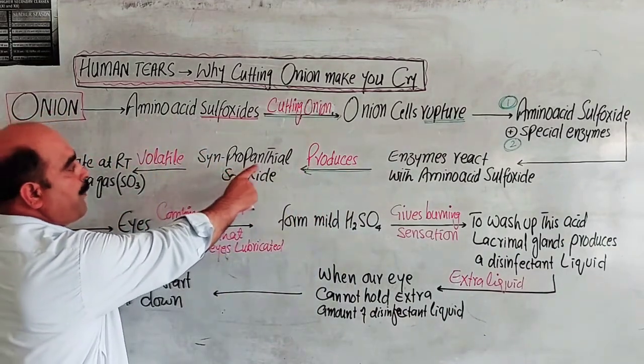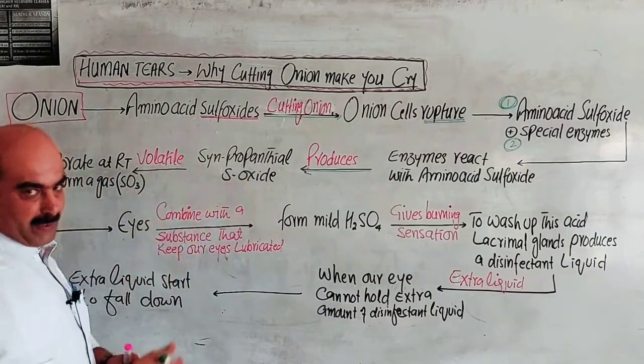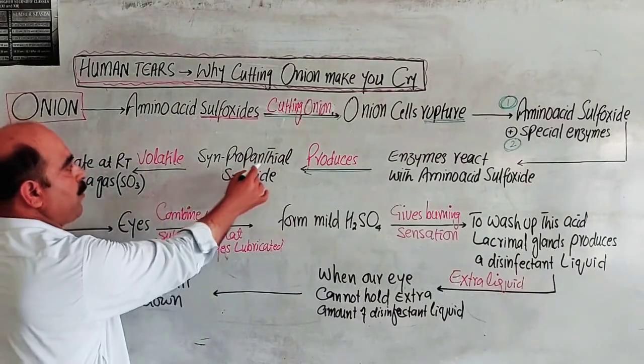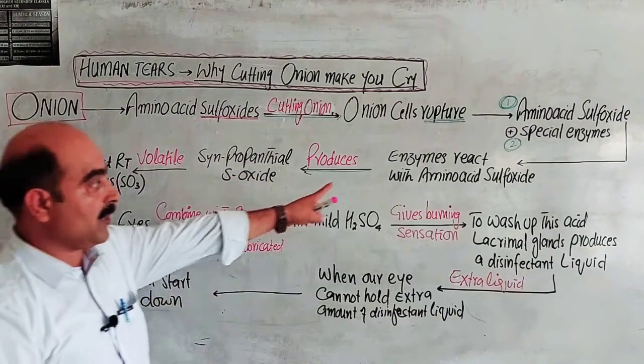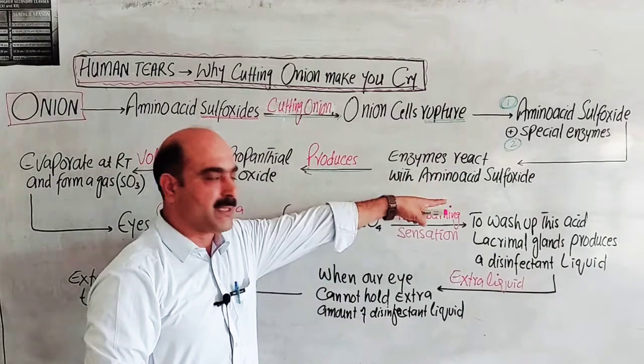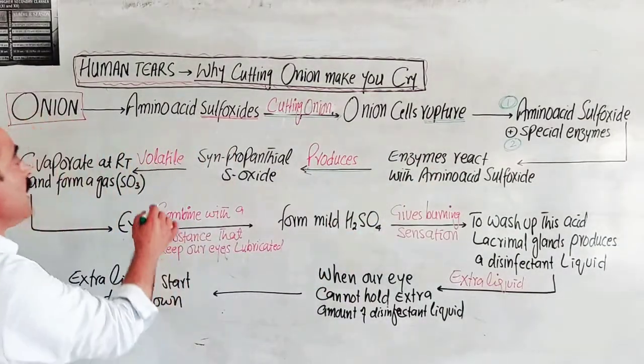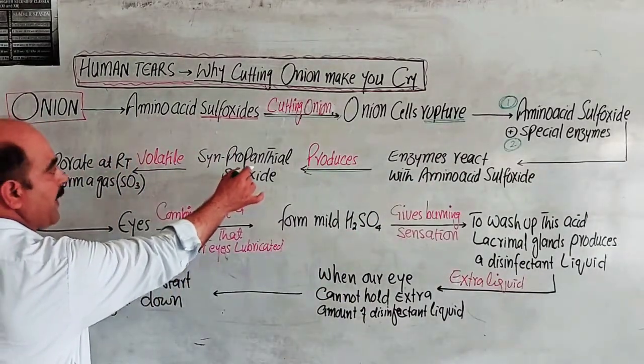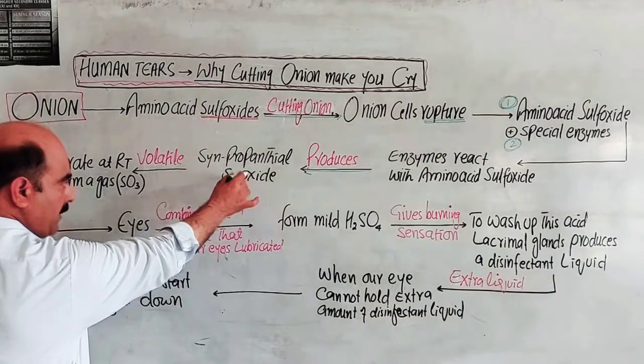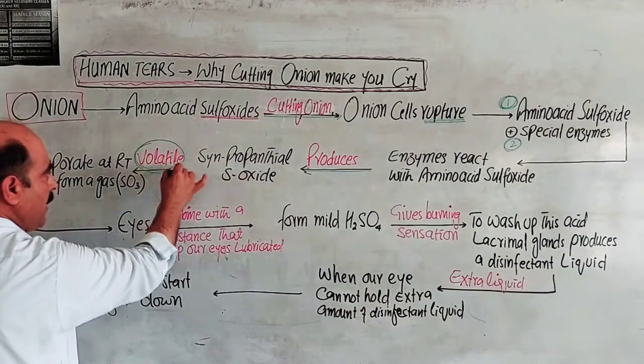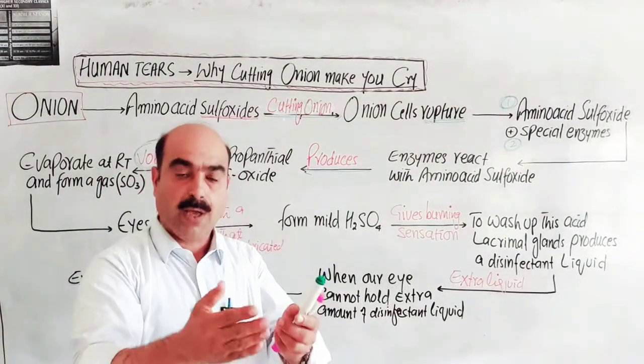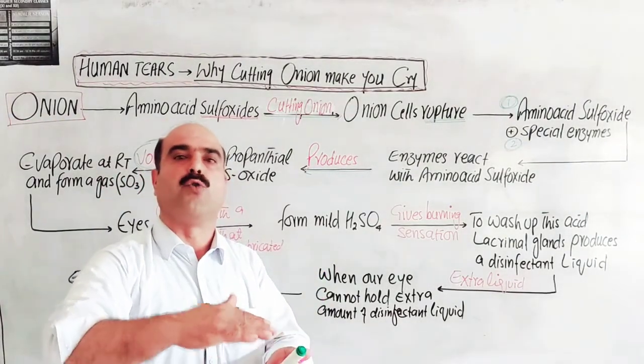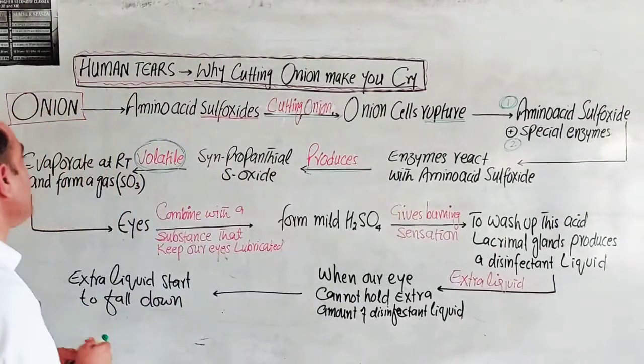This produces syn-propanethial sulfoxide. The enzymes and amino acid sulfoxide produce syn-propanethial sulfoxide. This is volatile in nature. Volatile means evaporatable - it can evaporate at room temperature.